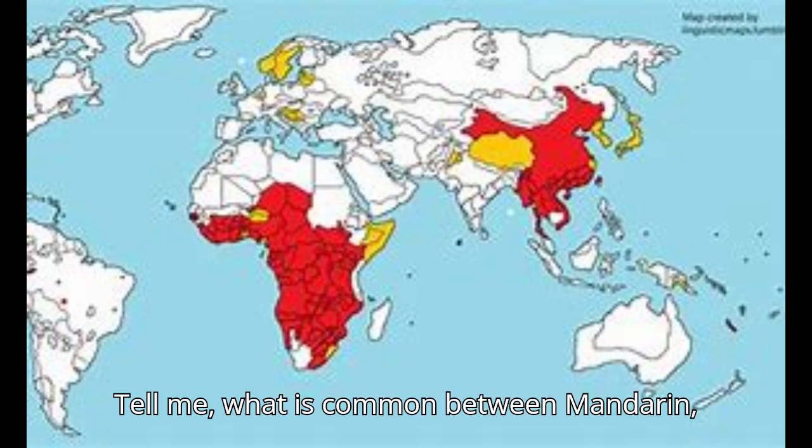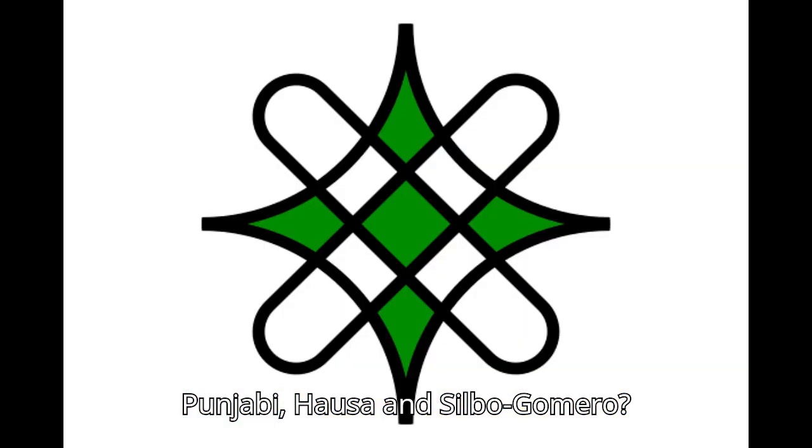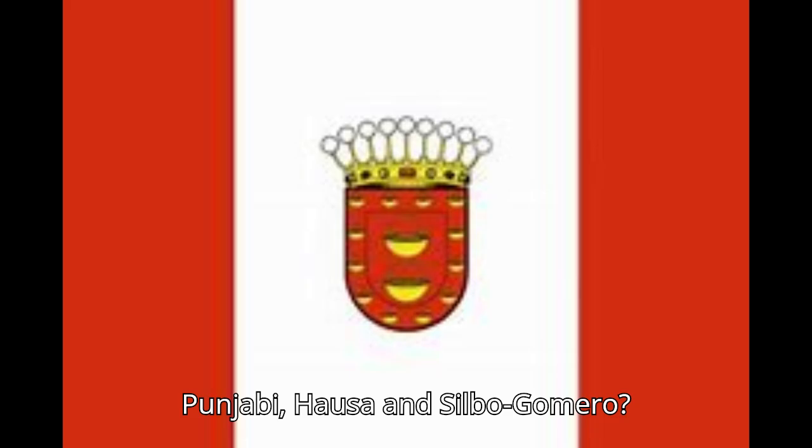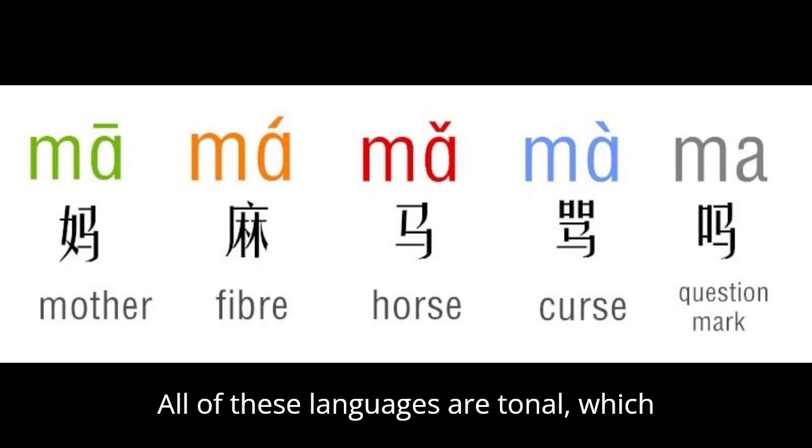What is common between Mandarin, Punjabi, Hausa, and Silbo-Gamaro? All of these languages are tonal.